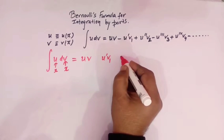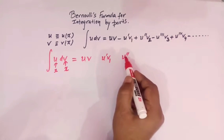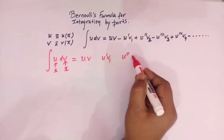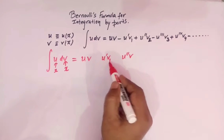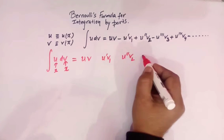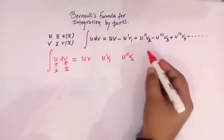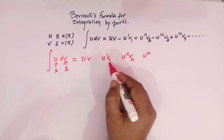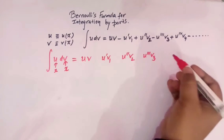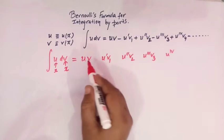Now in the next step, we will write u double prime — that is, we will again differentiate u' with respect to x. And here we will have v2. In the fourth term, here we have the first derivative, here the second derivative, then we will have the third derivative, and here we have v1, v2, now v3. In the next step, we will write the fourth derivative of u, and here we will have v4, and so on.